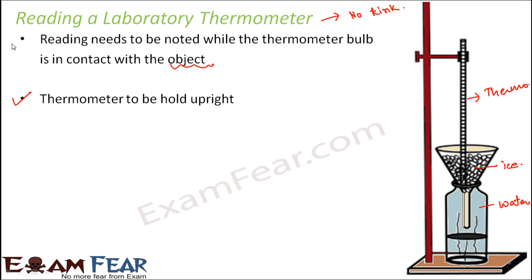Secondly, the thermometer must be held upright — this is another difference from the clinical thermometer. With the clinical thermometer, slight tilting doesn't matter as long as the bulb is under your tongue. But with the laboratory thermometer, tilting changes the heat available to the bulb and therefore changes the reading. It is very important to hold it exactly upright. That is why in most laboratories the thermometer is provided with a clamp stand — fix the thermometer in the stand, insert it into the solution, and immediately note the temperature.